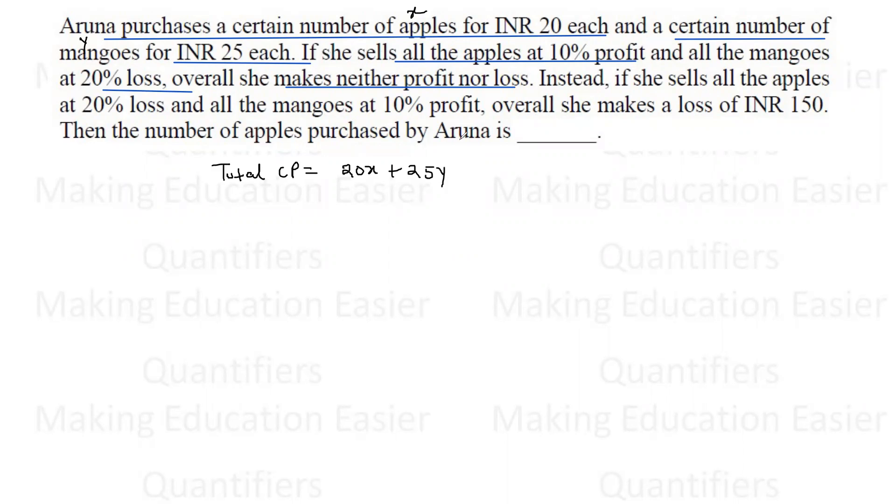She sells all the apples at 10% profit - so 20 times 1.1, which is 22 rupees per apple. All the mangoes at 20% loss - 25 times 0.8, which is 20 rupees per mango. Now what would be the selling price?